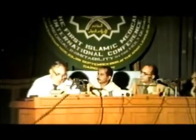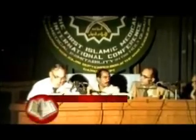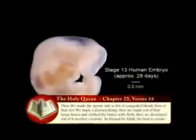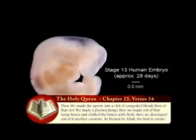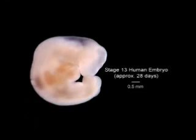The mudga stage, from Surah Al-Mu'minun ayah 1 to 14: 'Then we created the drop into a leech-like structure, then of that leech-like structure we made a chewed-like substance.' This chewed-like substance can be seen here and begins during the sixth week of development.